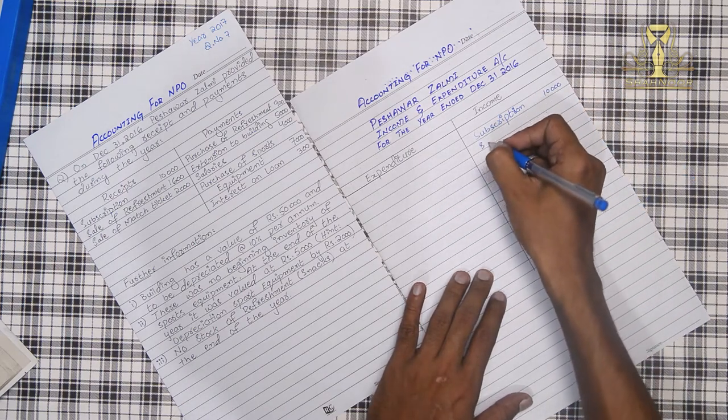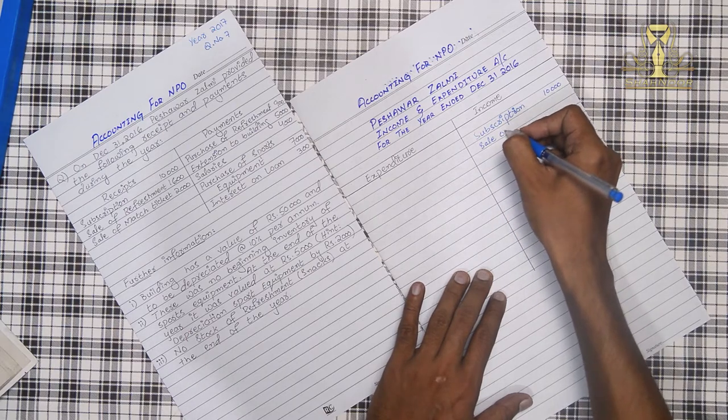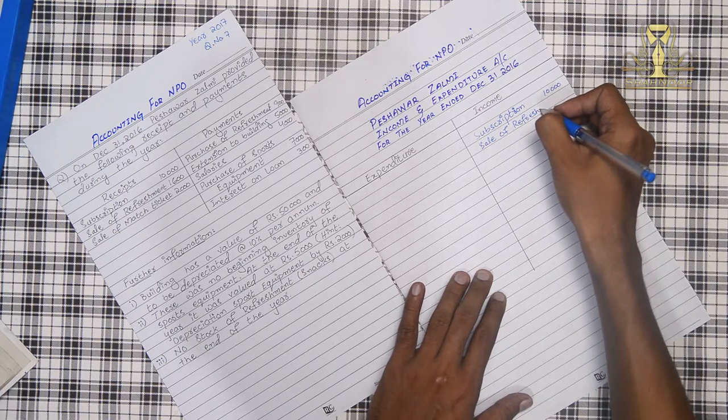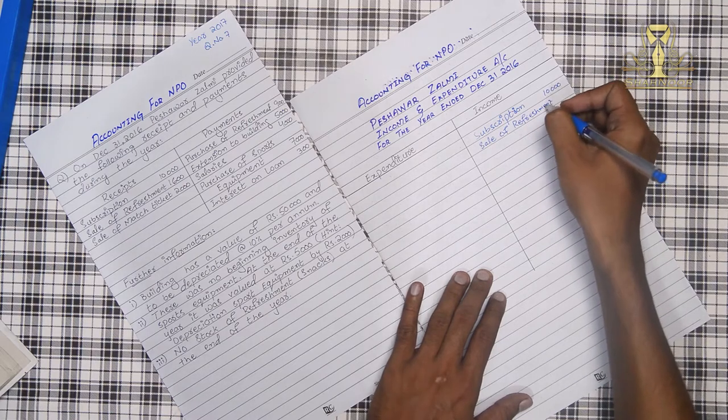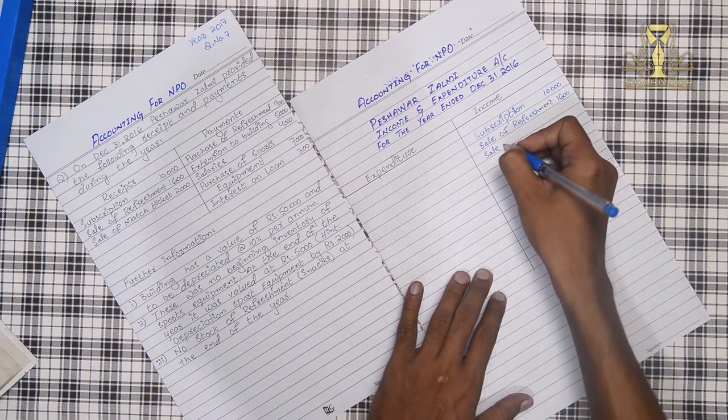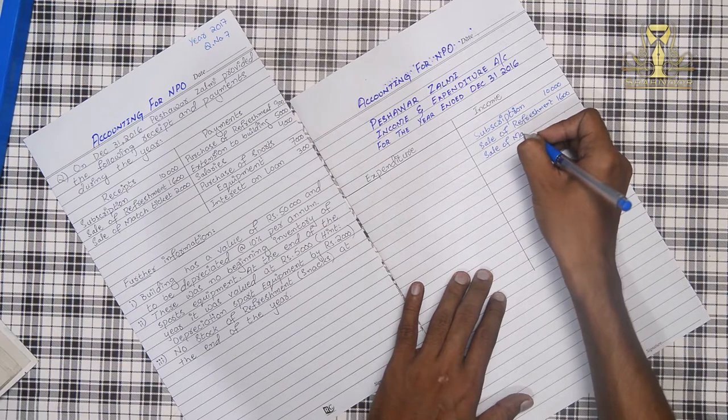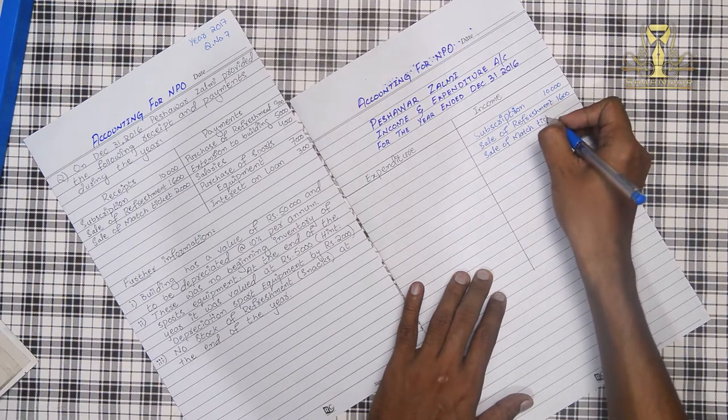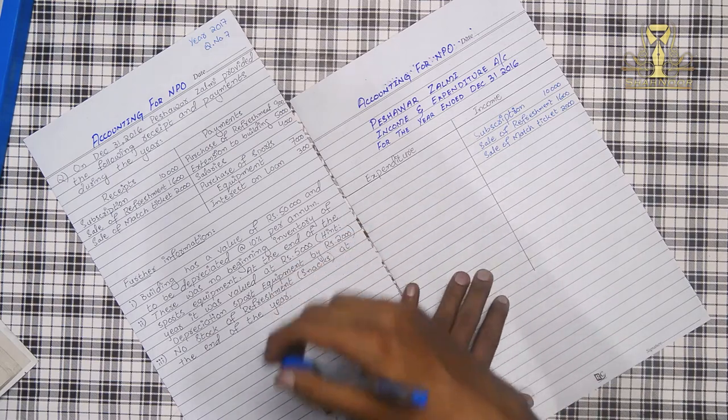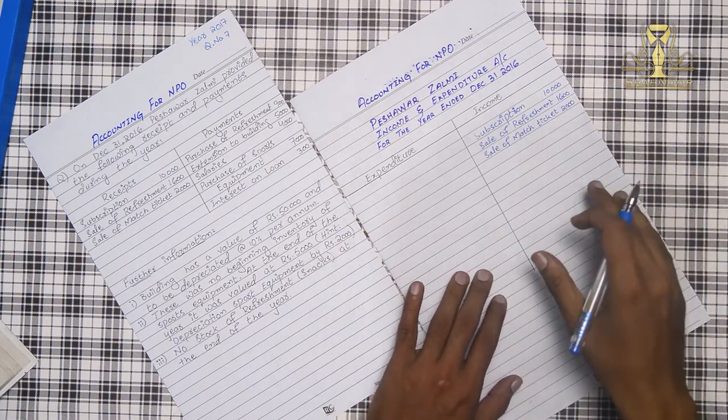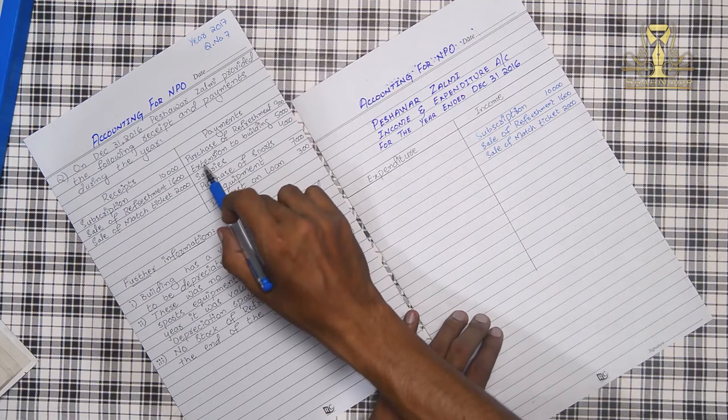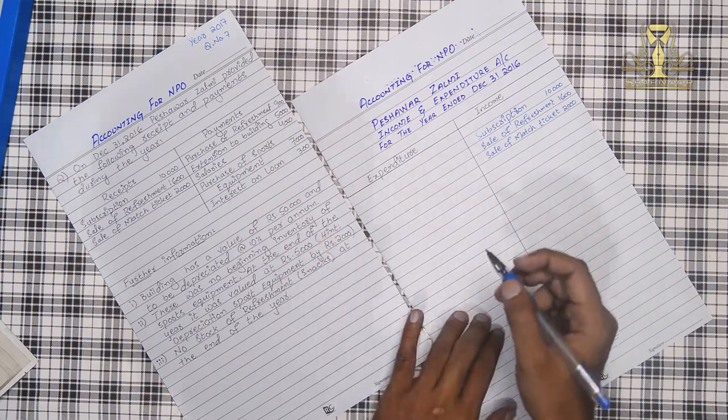We will start with a second item, sale of refreshment, 1,600. Sale of ticket, 2,000.